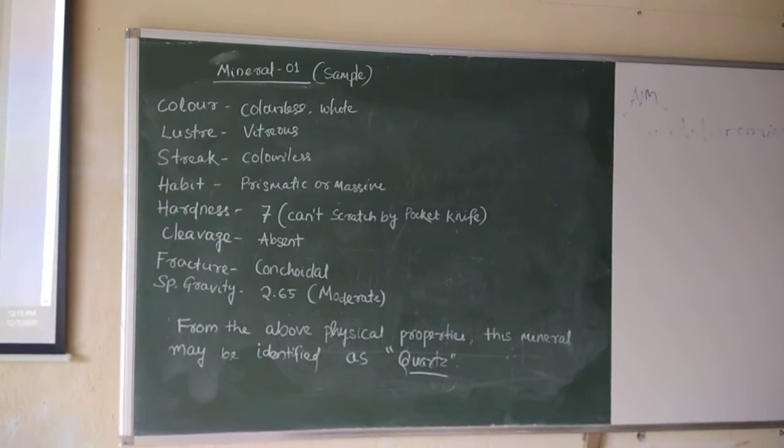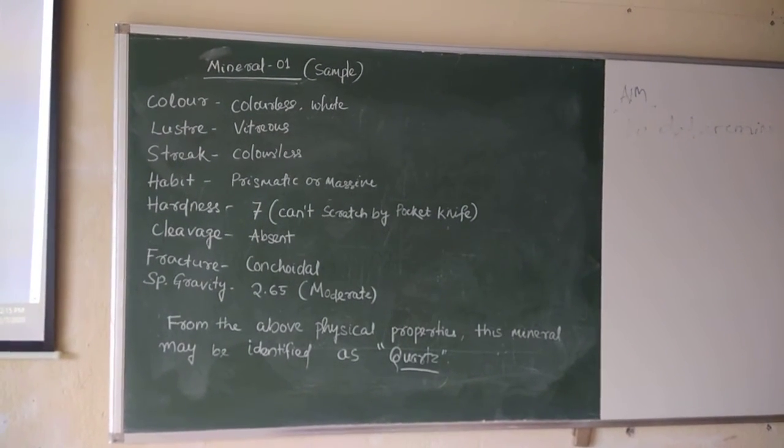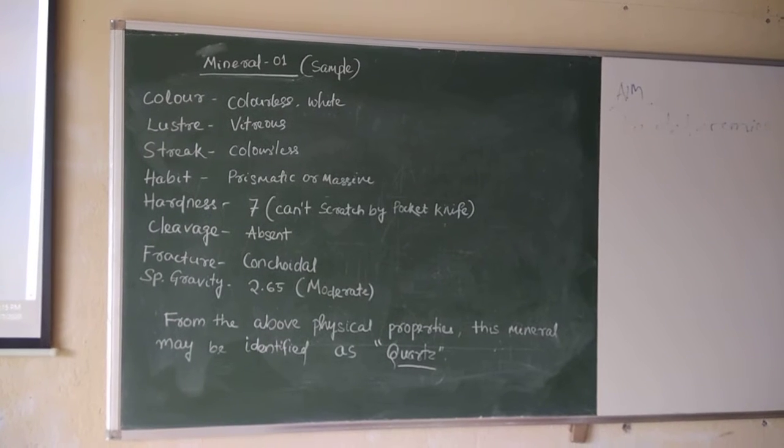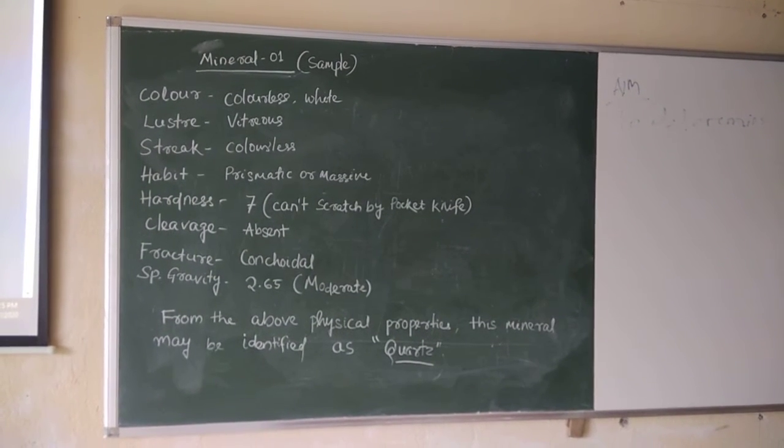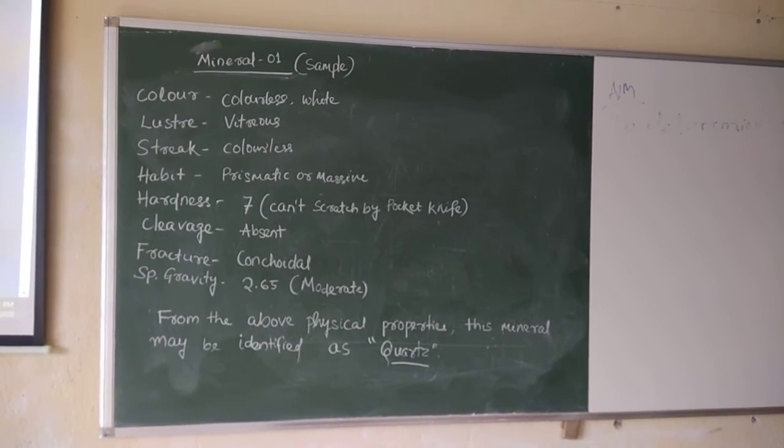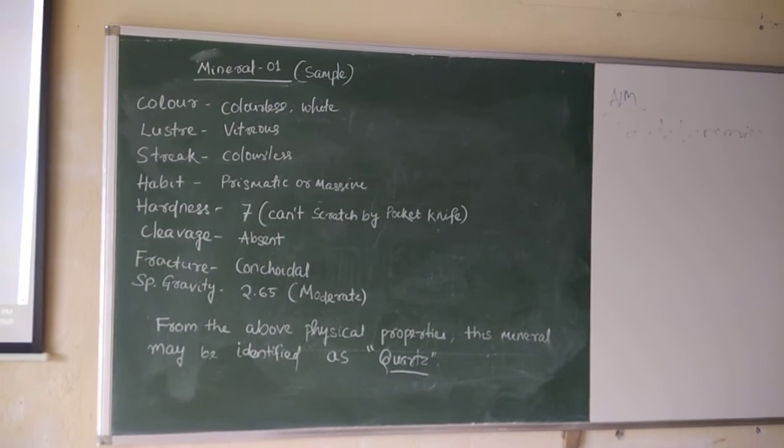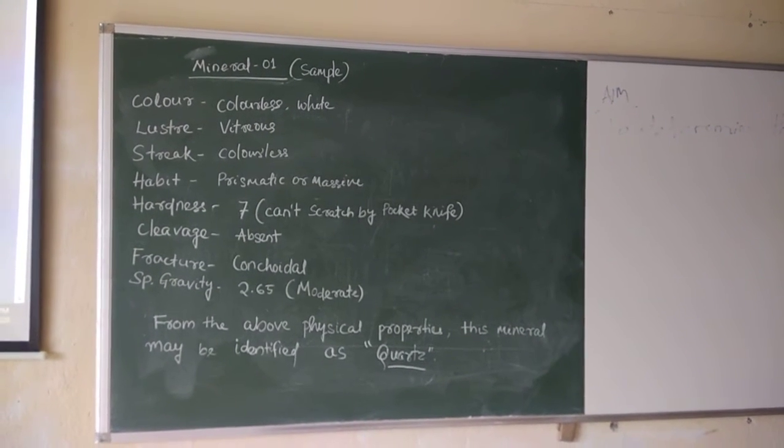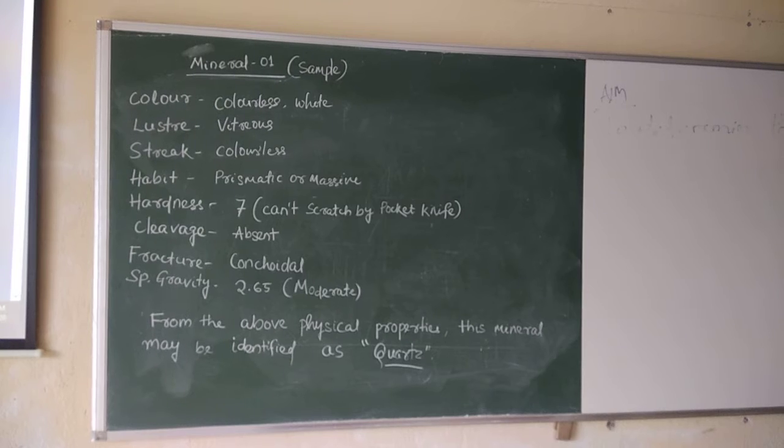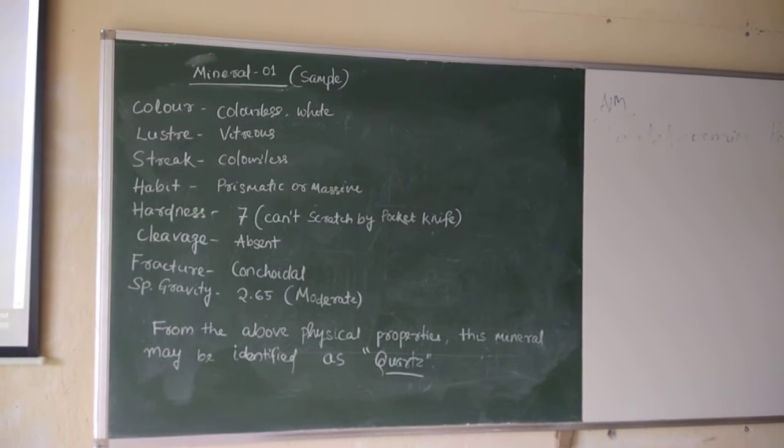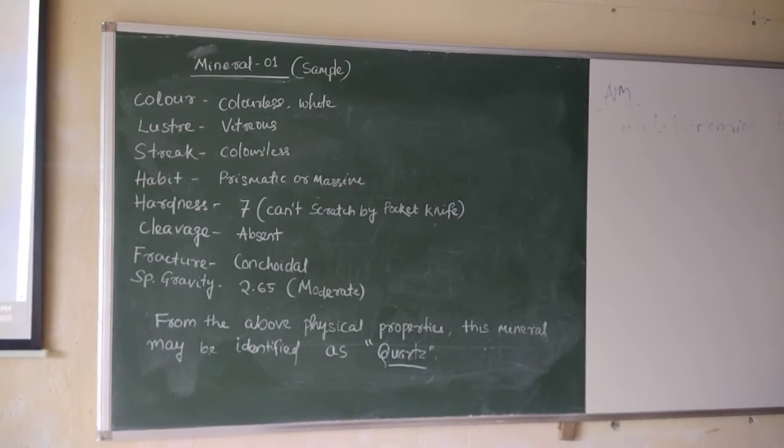So here is the sample of how to write the physical property of a mineral. Imagine one sample is given to you. You have to write like mineral number one, then color, luster.